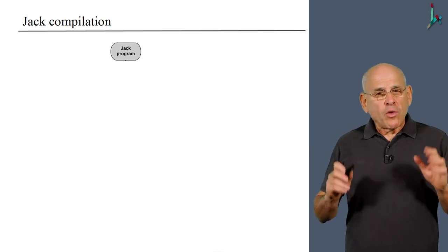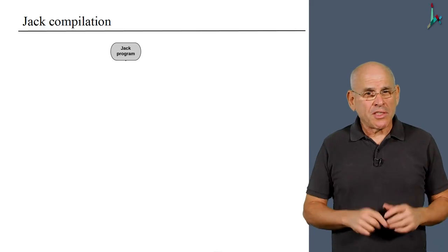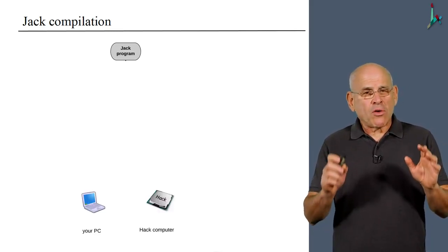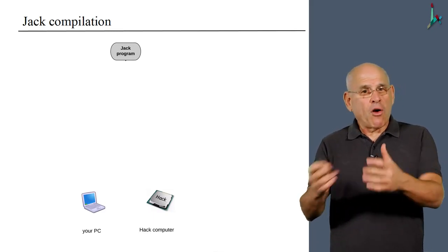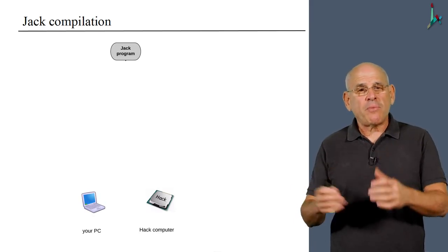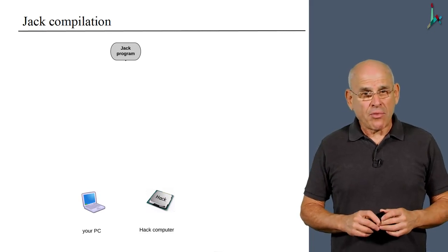So how do we do it in Jack? Well, Jack is a Java-like language which we use in this course. We are going to execute Jack programs on two different platforms. One platform will be your own PC, whatever PC you're using. The other platform is going to be the hack hardware that we built in part one of Nand to Tetris.